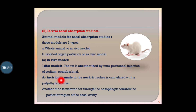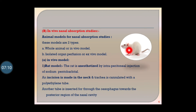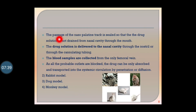An incision is made in the neck, and the trachea is cannulated with a polyethylene tube. Another tube is inserted through the esophagus towards the posterior region of the nasal cavity. The passage of the nasal-palatine tract is sealed so that drug solution is not drained from the nasal cavity through the mouth.